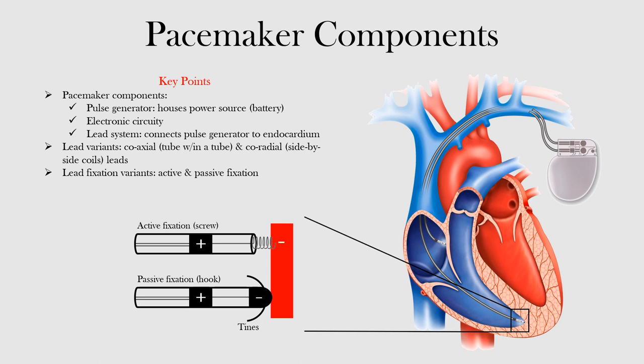Cardiac tissue is excitable not only by action potentials originating in the sinus node or other pacemaking cells, but also by external stimuli that drive cells to their activation threshold. Any stimulus that drives the membrane potential to its activation threshold will stimulate an action potential, which will then subsequently propagate to neighboring cells and ultimately depolarize connected myocardium. This is the main principle behind artificial pacemakers.